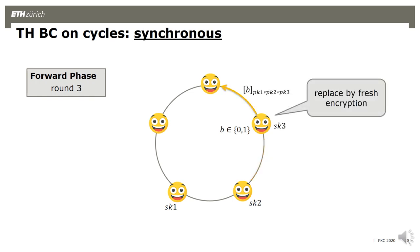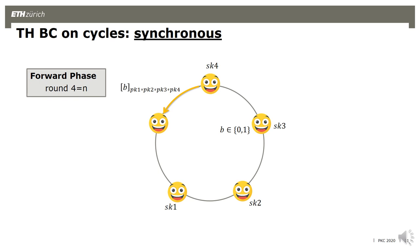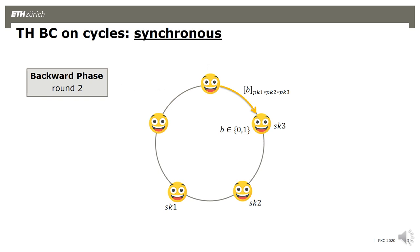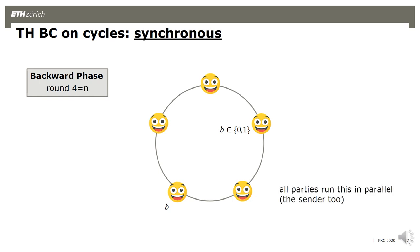In the next round we go to the sender, who does the same but additionally replaces the ciphertext by the encryption of his bit. Now we have encryption of the bit going to the next party, who adds his key to the product key. After traversing all five parties in four rounds, the ciphertext contains the bit encrypted under the product public key of all parties but the last one. Then we start the backward phase where parties delete their keys from the product key one by one. After the last deletion, the original party can decrypt and get the bit. To get topology-hiding broadcast, we run this in parallel — all parties run this in parallel to receive their bits in both directions, and the sender also acts as receiver to hide who he is.